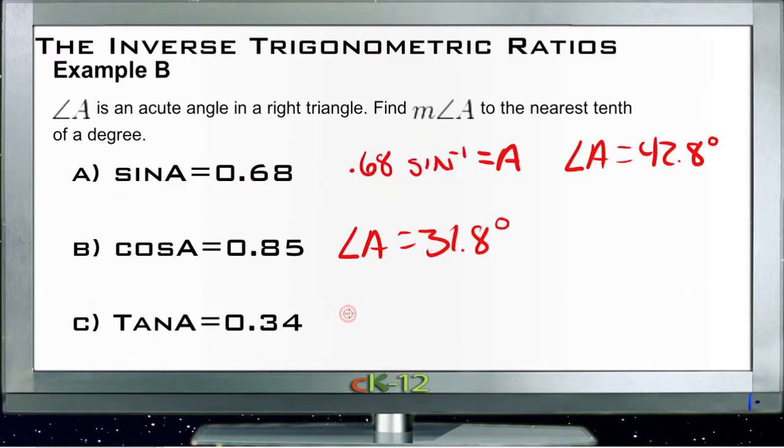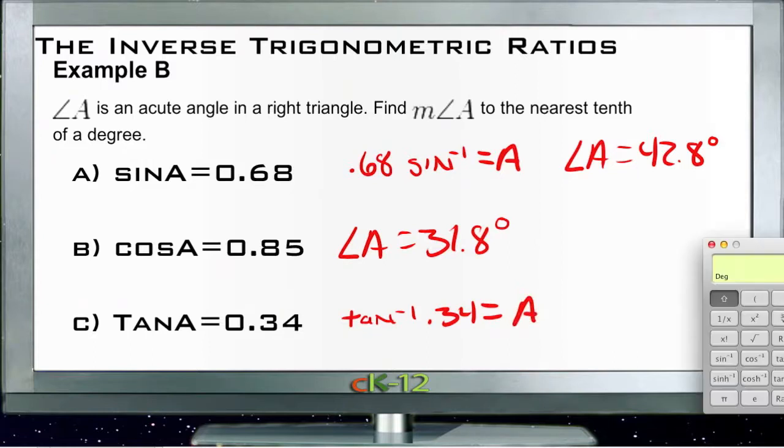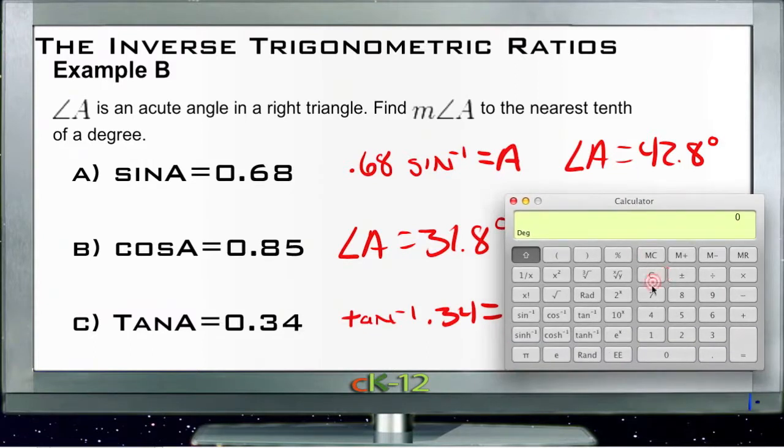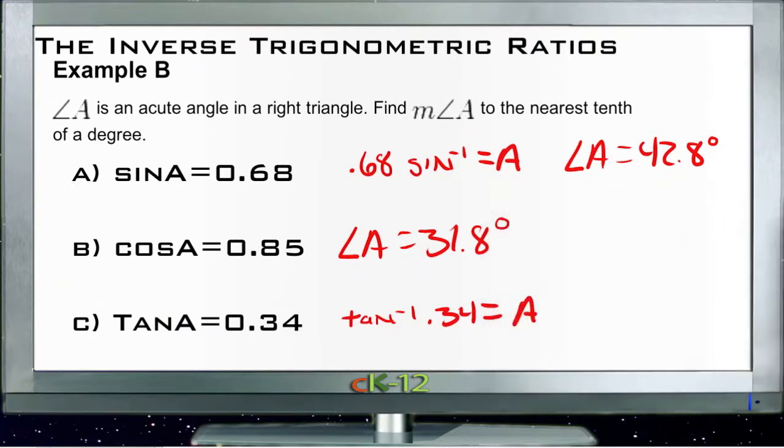For our third one, if the tangent of A is 0.34, then the inverse tangent of 0.34 will be A. We'll clear, do 0.34, inverse tangent, and get 18.8 degrees. So angle A equals 18.8 degrees.